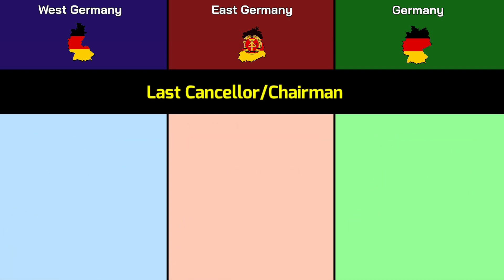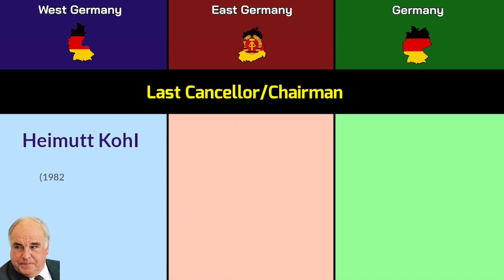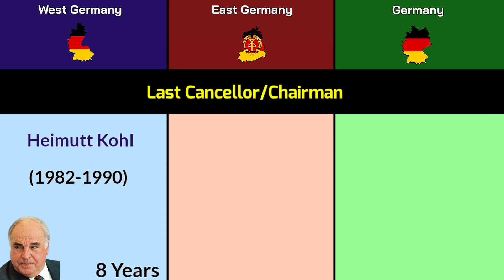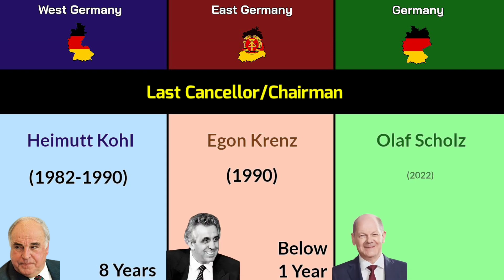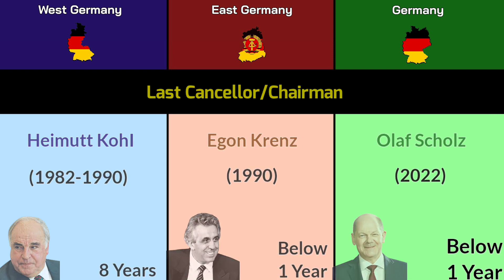Last Chancellor or Chairman — West Germany: Helmut Kohl, 1982–1990, total 8 years; East Germany: Egon Krenz, 1990, below 1 year; modern Germany: Olaf Scholz, reign from 2022, below 1 year so far.